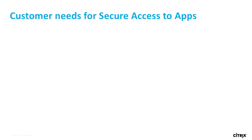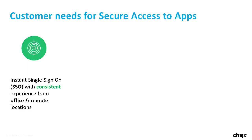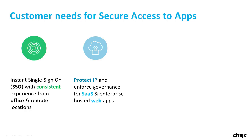Before going into what the solution is, I wanted to paint the picture around what core needs our customers have been telling us, which is driving the development of the solution. There are four key requirements when it comes to delivering secure access to apps. One is the ability to do single sign-on — an important experience feature that also reduces the overall threat perimeter, because you don't have to log into 50 different sites and share your passwords. Being able to do that along with having the core authentication mechanisms is a key requirement.